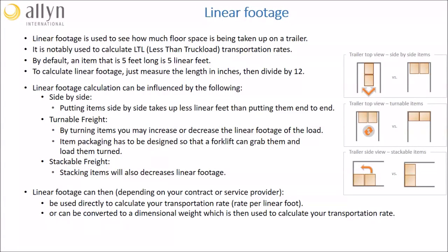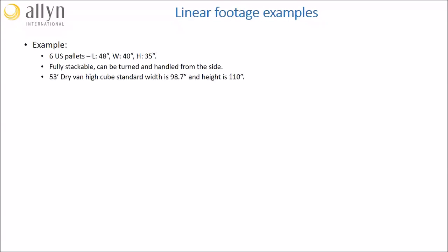We will look at this concept in more detail, but first let us look at an example of how to calculate linear footage. We want to transport six standard US pallets. Length is 48 inches, width is 40 inches, and the height of each pallet is 35 inches. These pallets are fully stackable and also can be turned and handled from the side. The truck our service provider uses is a 53-foot dry-van high cube, with a standard width of 98.7 inches and a standard height of 110 inches.